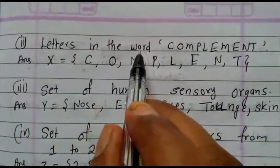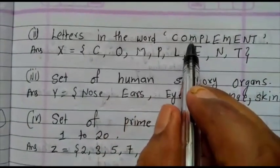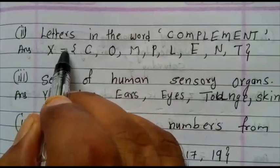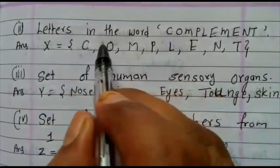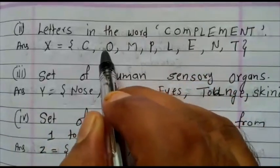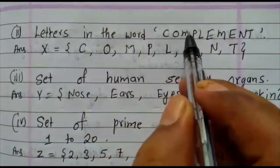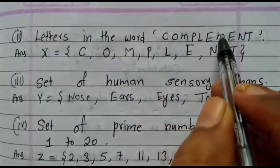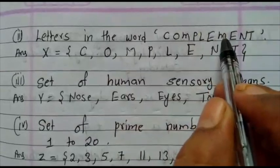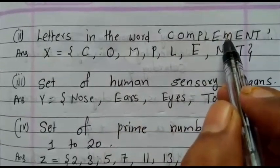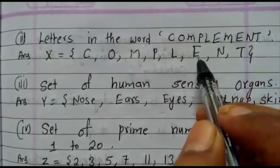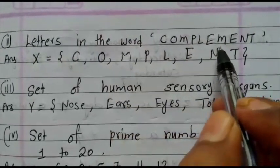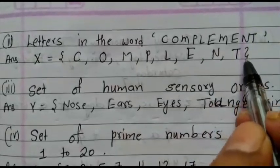Second question. Letters in the word complement. One word is given complement. We want to write down in the form of a listing method. Write the set X equals, curly bracket. First write the first letter C, comma, next O, comma, M, and next P, comma, next L, comma, next E, comma, M. Again, here M we written, so don't write the M. Elements are not repeated. Next element E we already written, don't write this letter. Next letter is N. Write down the N, comma, that is word T, and close the curly bracket.